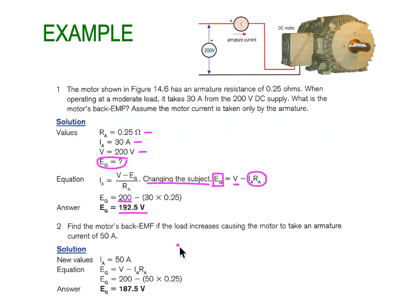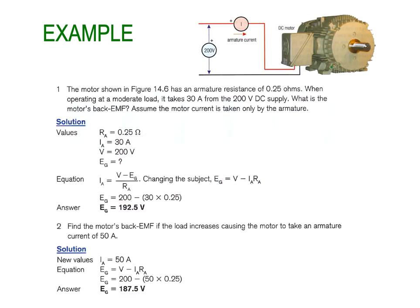Step 2: Find the motor's back EMF if the load increases causing the armature current to go to 50 amps. Using the same equation: 200 − (50 × 0.25) gives a back EMF now reduced to 187.5 volts. The torque has increased in the motor because the back EMF has decreased in response to the increased load.